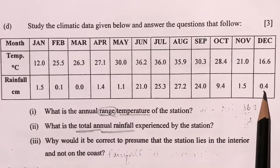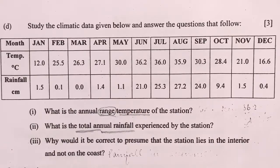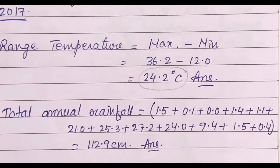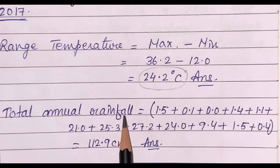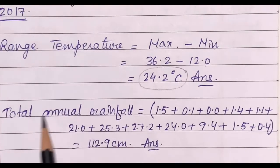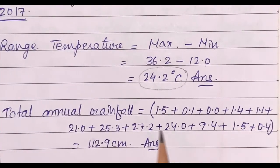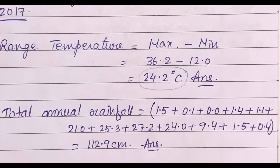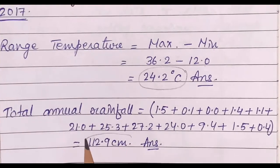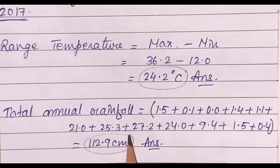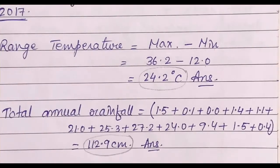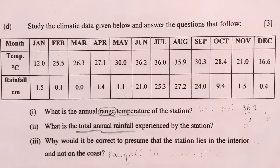For step 1, total annual rainfall is equal to — then put the values of rainfall under the bracket and add — to get the answer, that is 112.9 centimeters. The last question is: why would it be correct to presume that the station lies in the interior and not on the coast?